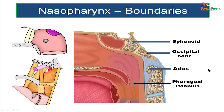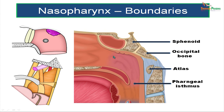The nasopharynx is almost cuboidal in shape with fixed walls — the mucosa is adherent to the underlying bony wall making it non-mobile. It has a roof, a posterior wall, a floor, an anterior wall, and two lateral walls. The anterior wall is deficient with the choana — the posterior nasal aperture — communicating with the nasal cavity. The roof and posterior wall slope downwards and backwards, formed by the body of the sphenoid, the basilar portion of the occipital bone, and the anterior arch of the atlas.